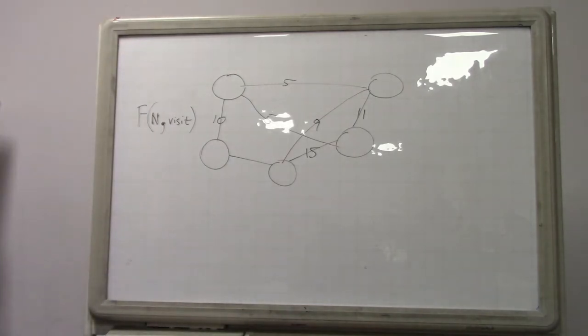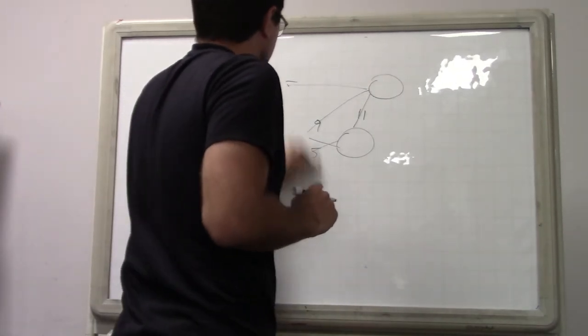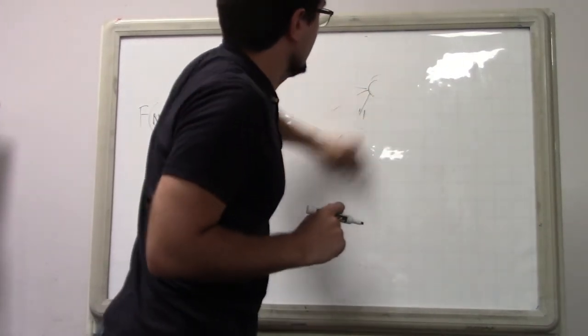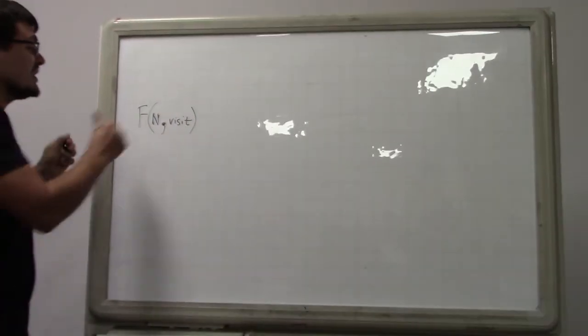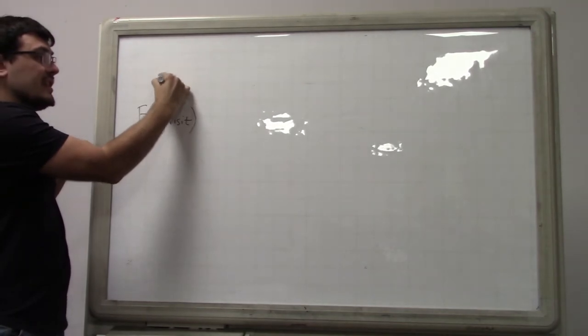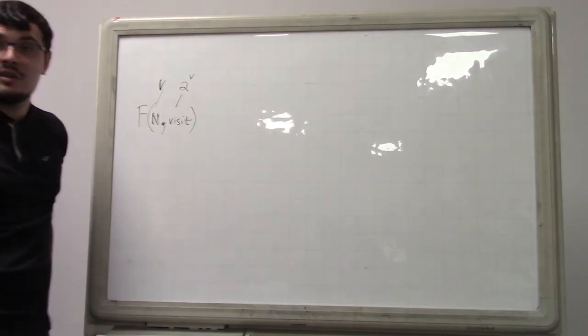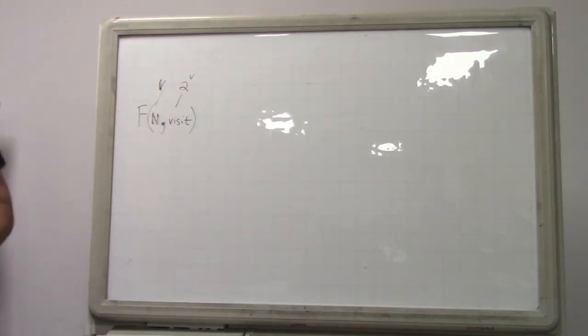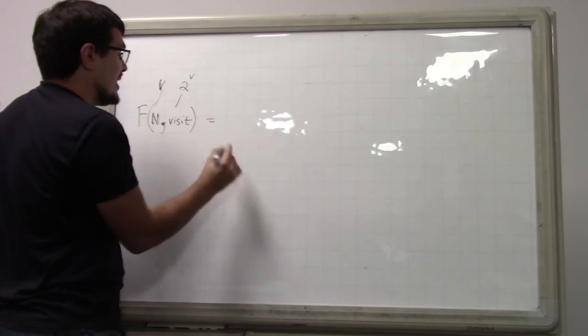So then, to kind of give this equation... So first of all, just a quick analysis. Like, if there are v vertices, this parameter is v, right? This is order v, but this one is 2 to the vth power. So we're going to have v times 2 to the vth power states. Wow, that's a lot of states. But at least it's better than v factorial. Okay, so let's just write the equation for this.